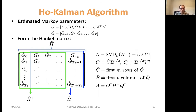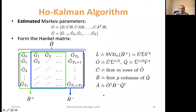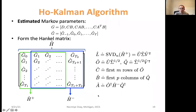What happens if we don't have the true Markov parameters but only estimated ones? We can still proceed the same way, but the SVD won't be exact. If we know the system order, we can truncate the singular values and still construct the matrices — this is what has been done in system identification for a long time. The question is: we know this works in the limit as noise goes to zero, but can we say something more precise about how the level of estimation error in the Markov parameters is reflected in the matrices we learn?